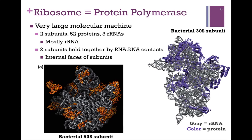You can also see that the ribosome has a very distinct three-dimensional shape. The two subunits are held together by rRNA-RNA contacts rather than protein-protein contacts. The internal faces of the subunits contact one another, as though we were to put the two palms of our hands together. We'll see how they come together in the process of translation later.